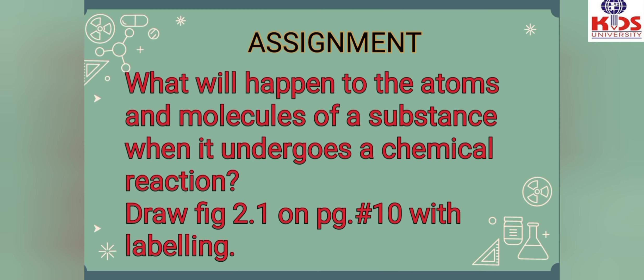I hope you understood my lecture. I am giving you some assignments according to this topic. Question number one: what will happen to the atoms and molecules of a substance when it undergoes a chemical reaction? Question number two: draw figure 2.1 on page number 10 with labeling. You need to read pages 10 and 11 thoroughly, then give the answers, and draw figure 2.1 on the interleaf page neatly with labeling and equations.